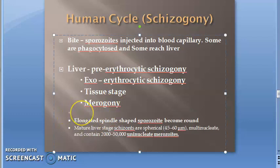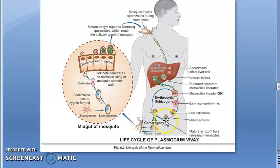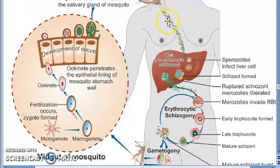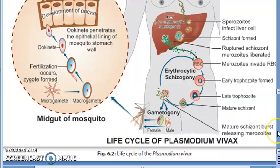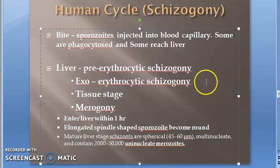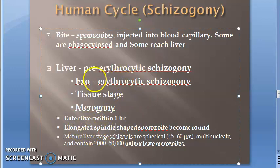The sporozoite enters the liver within one hour of being injected. The elongated, spindle-shaped sporozoite becomes round once it enters the liver cell. Then it undergoes repeated nuclear division, forming many daughter nuclei, each of which gets cytoplasm, producing a large number of merozoites.